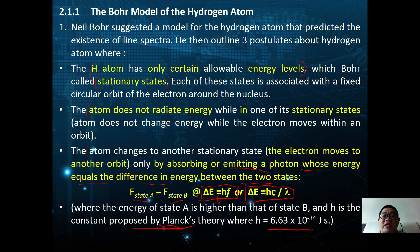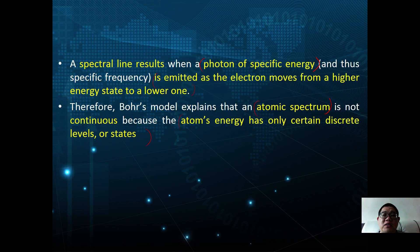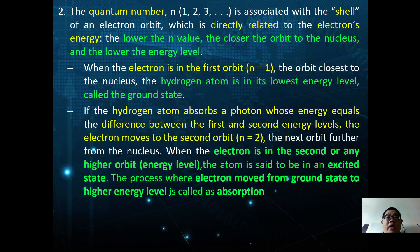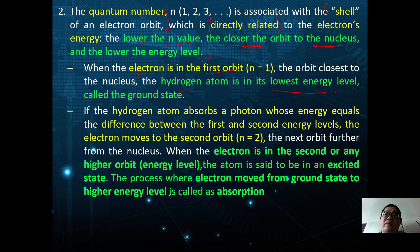A line spectrum results when a photon of specific energy is emitted as an electron moves from a higher energy state to a lower one. This explains why atomic spectra are not continuous — atoms can only have certain discrete energy levels or states. These states are described using the quantum number n (n = 1, 2, 3, ...), which is associated with the shell of the electron orbit and directly related to energy. The lower the n value, the closer the orbit to the nucleus and the lower the energy level. When n = 1, the hydrogen atom is in the lowest energy level, called the ground state.